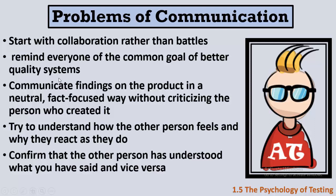First, start with collaboration rather than battles — try not to fight with people, collaborate with them. Second, remind everyone of the common goal of better quality systems; when a communication problem occurs, remind them that your goal is a good product, not to criticize anyone personally. Third, communicate findings — bugs — in a neutral, fact-focused way with screenshots and videos, but never criticize the person who created the bug. Don't tell a developer their software is bad; nobody accepts that.